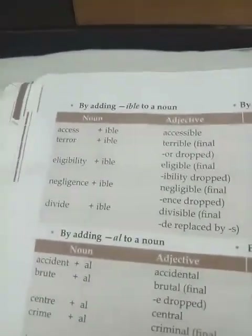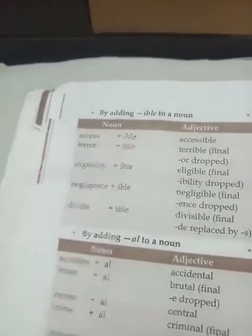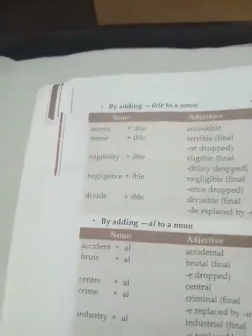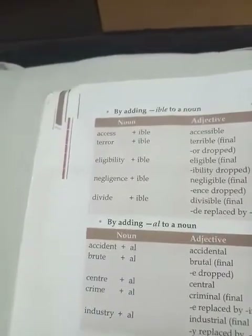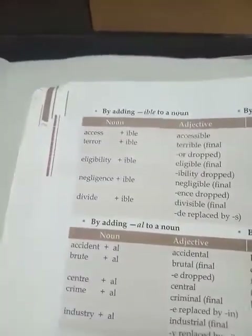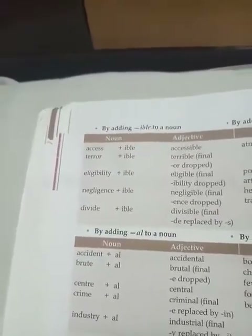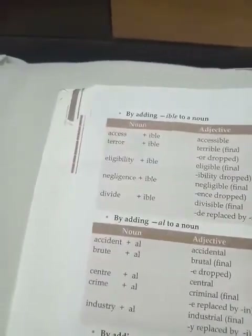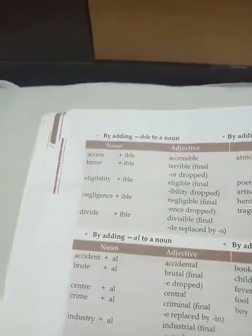By adding IBLE to a noun: ACCESS plus IBLE becomes ACCESSIBLE; ELIGIBILITY plus IBLE becomes ELIGIBLE; DIVIDE plus IBLE becomes DIVISIBLE.